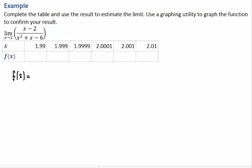What happens when you evaluate it at x equals 2? You have 2 minus 2 in the numerator, that gives you 0. When you evaluate the denominator, you get 2 squared plus 2, that's 6, minus 6, that's 0. So you have 0 divided by 0.